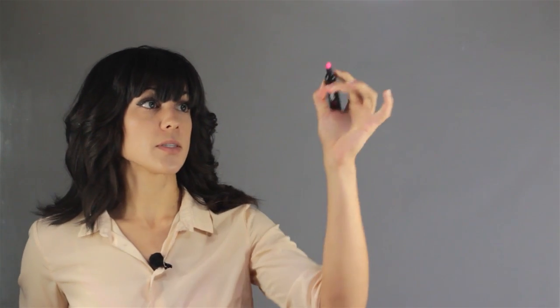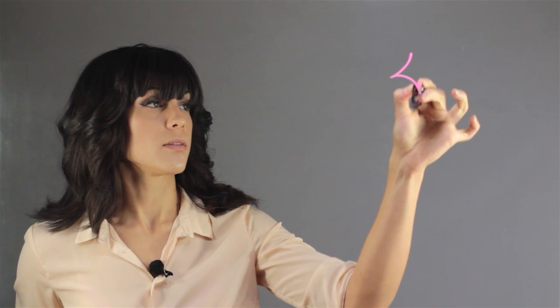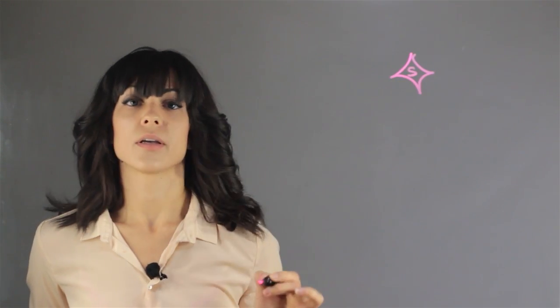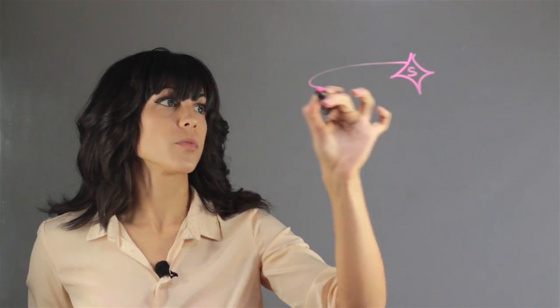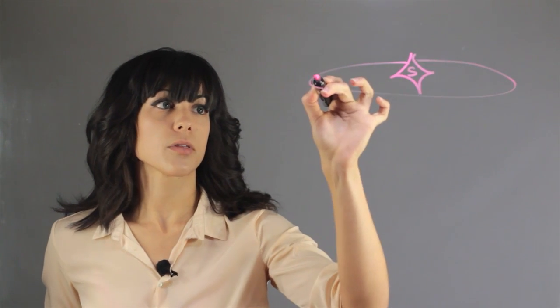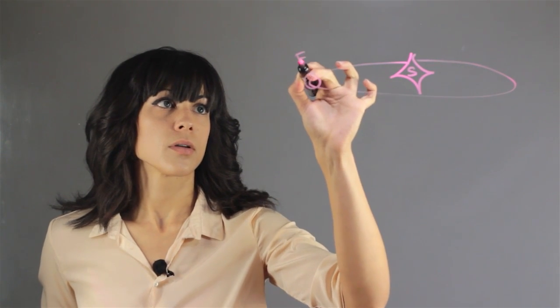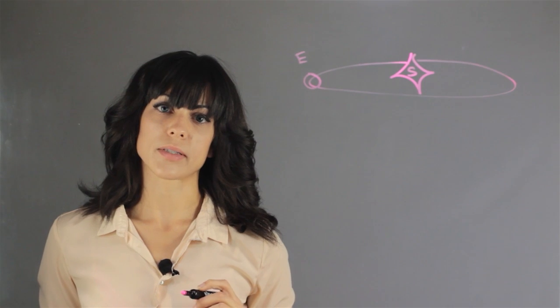So let's talk about the solar eclipse first. So the first solar eclipse is, let's say you have the Sun right here at the center, and then you have the orbit for the Earth, and we have the Moon floating around us.